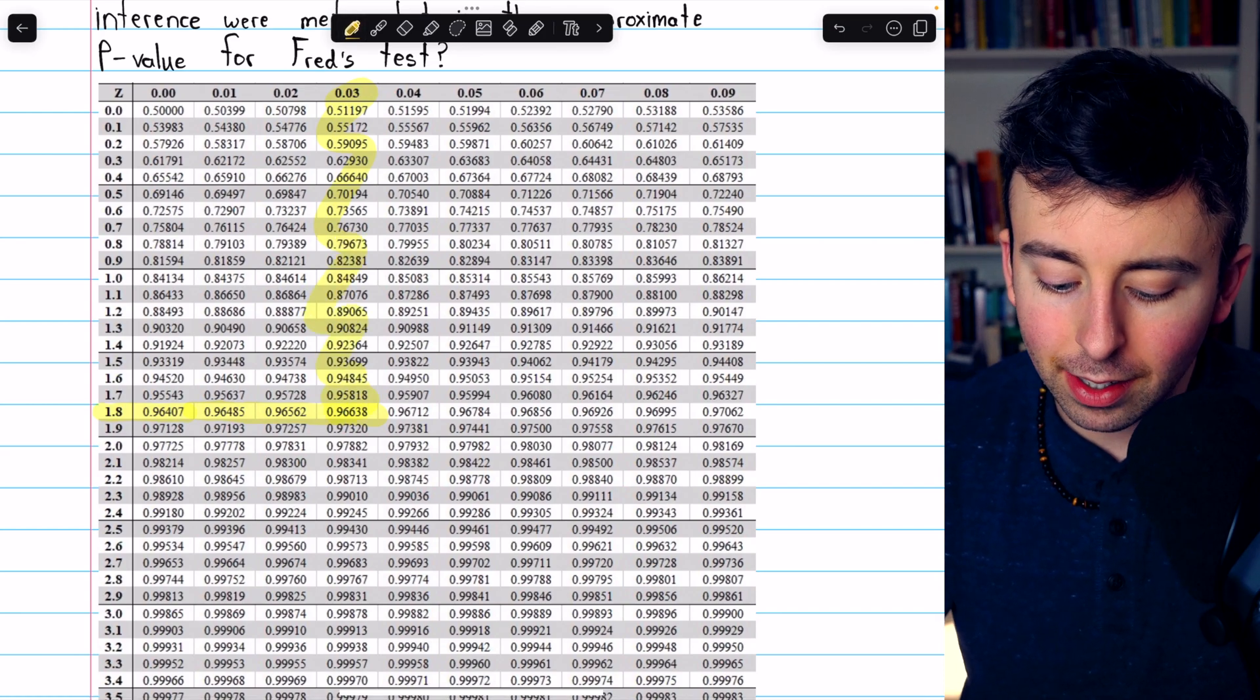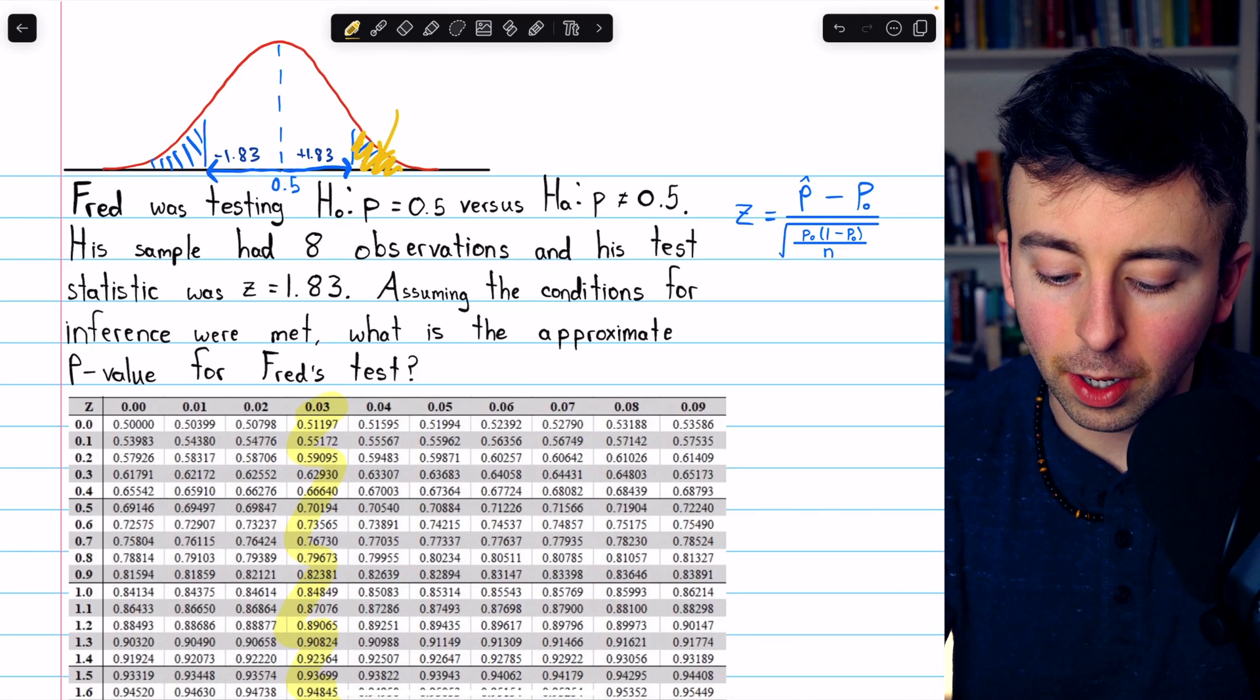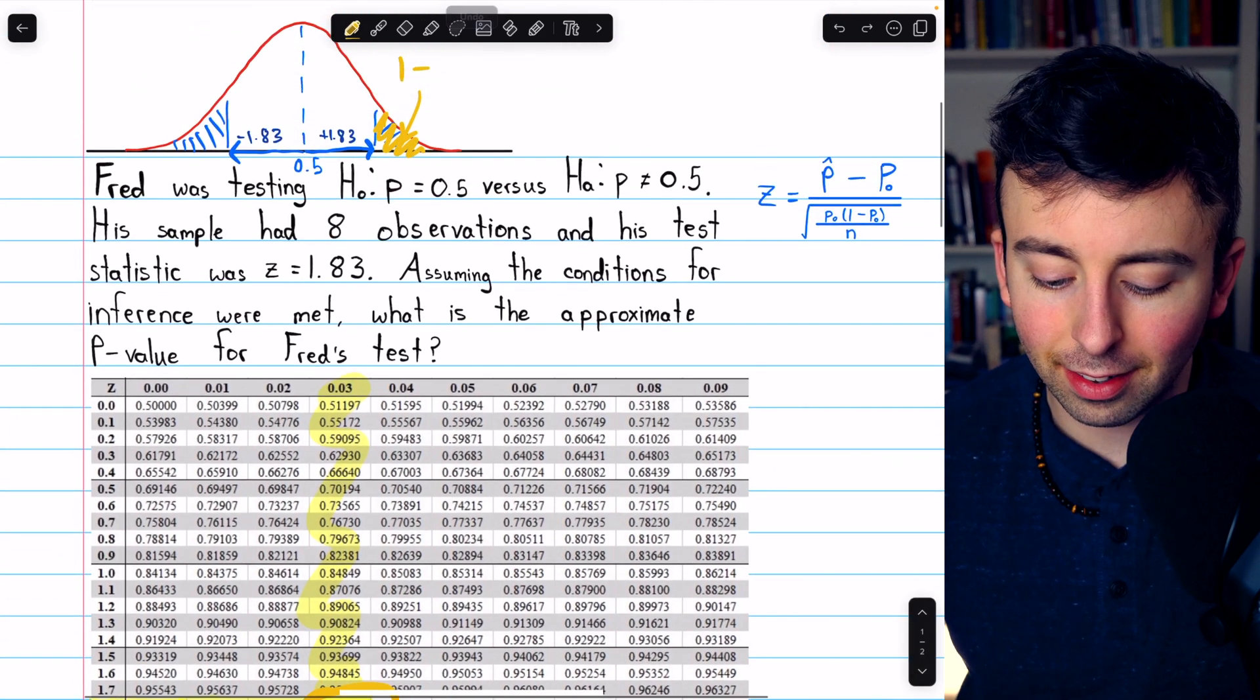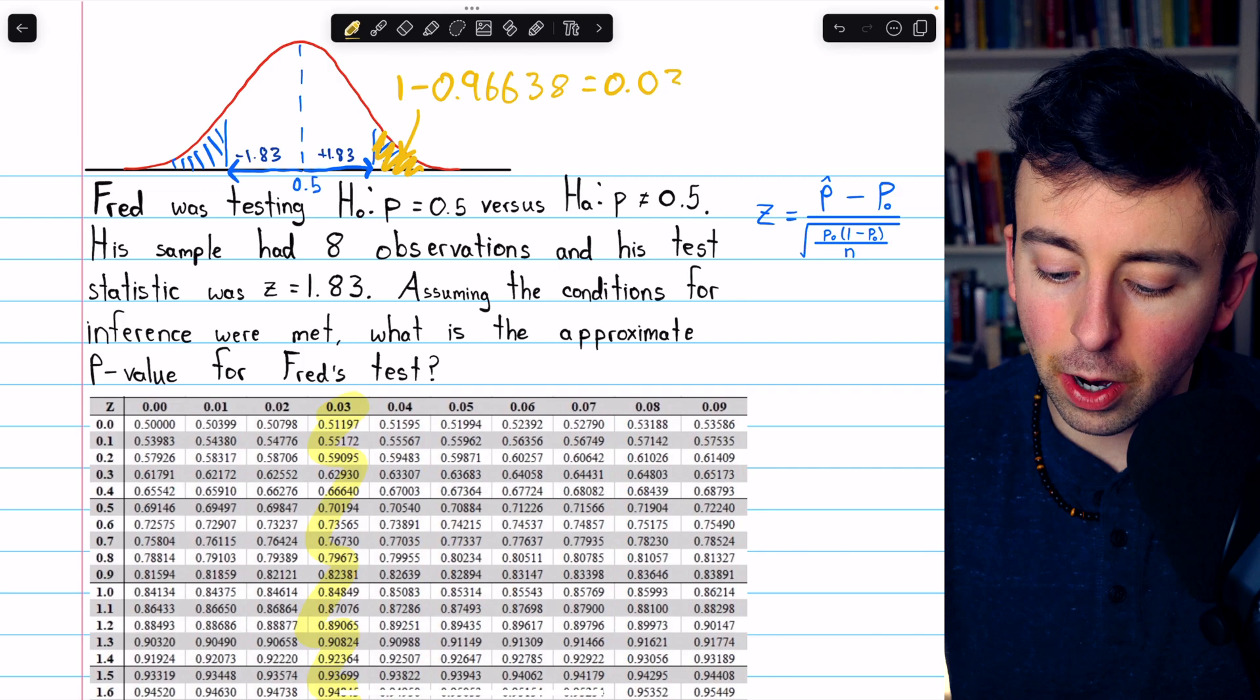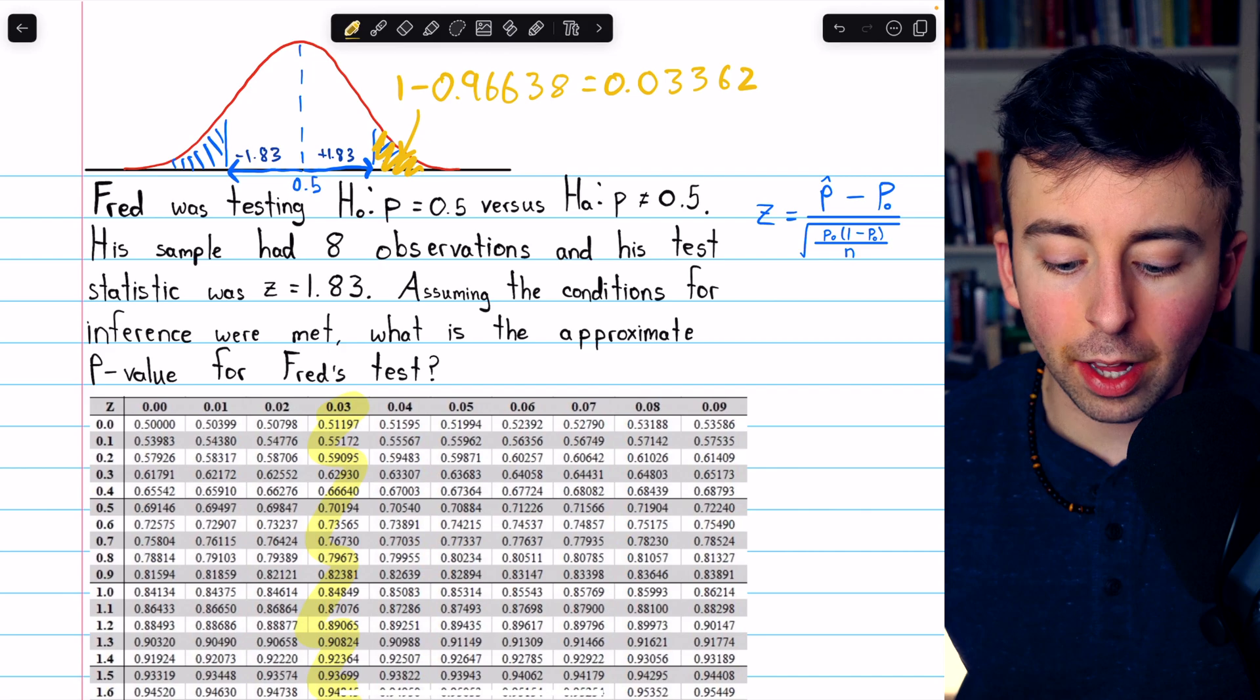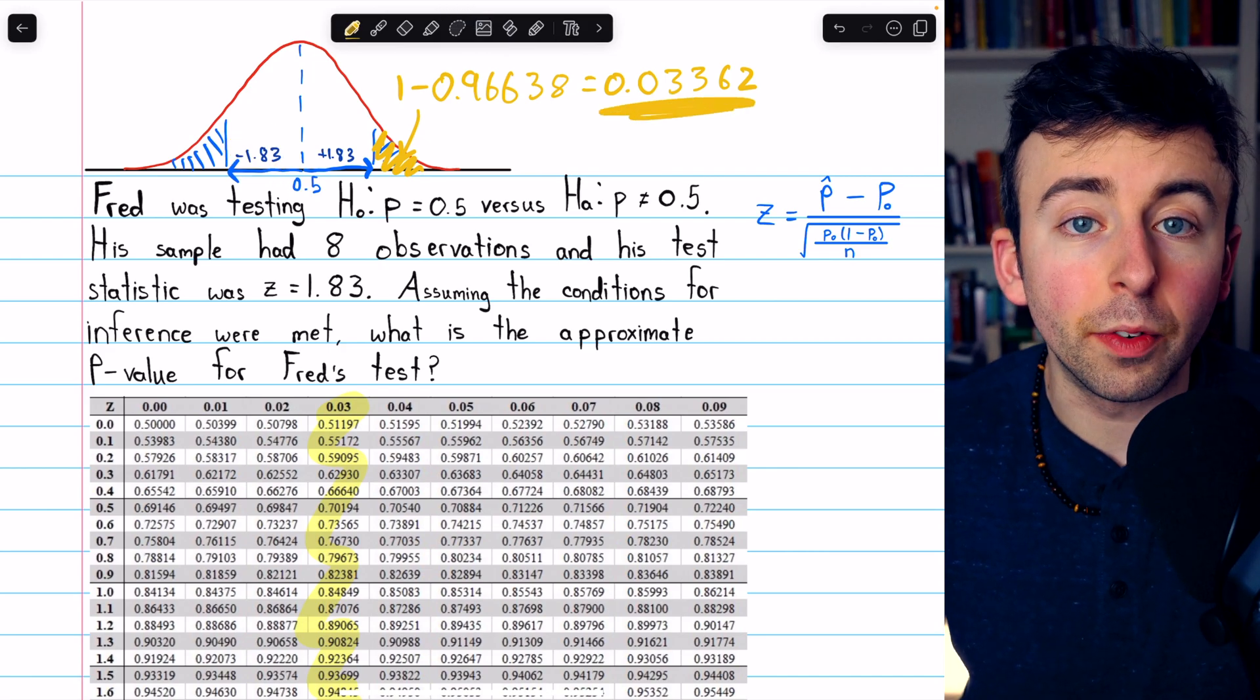So the complement of this is going to be this upper tail. So this area, the complement, it's going to be 1 minus 0.96638, and of course, that's equal to 0.03362. If you had a negative z-score table as well, and you looked up negative 1.83, this is what you would find.